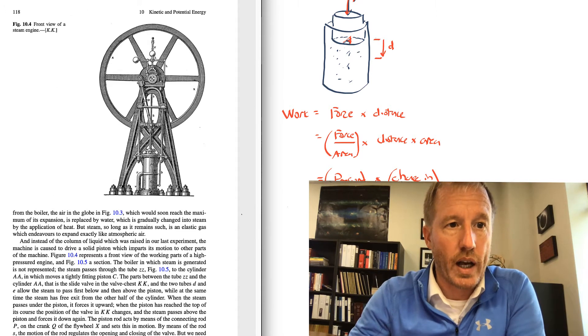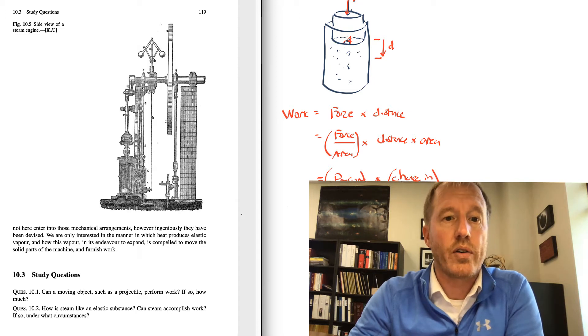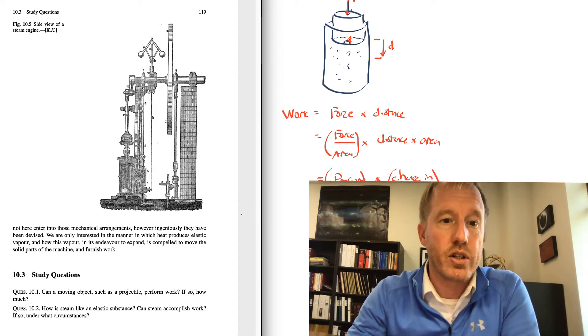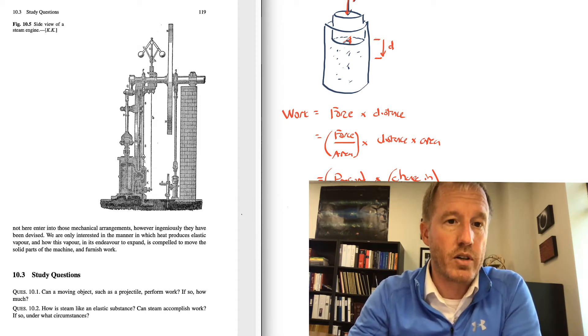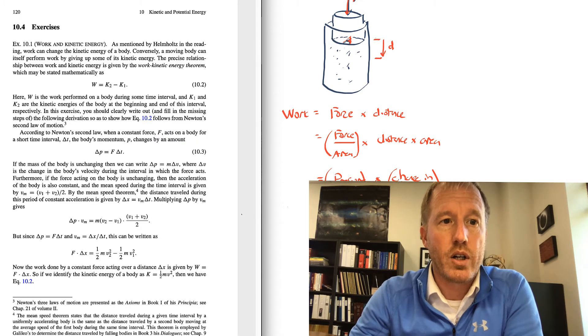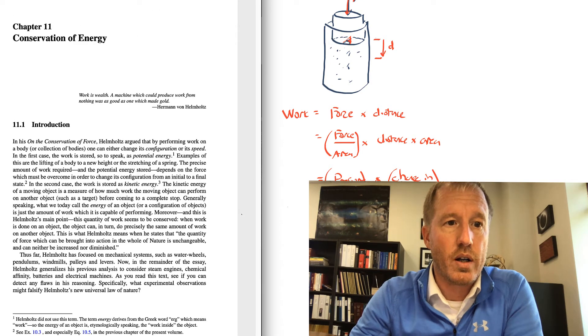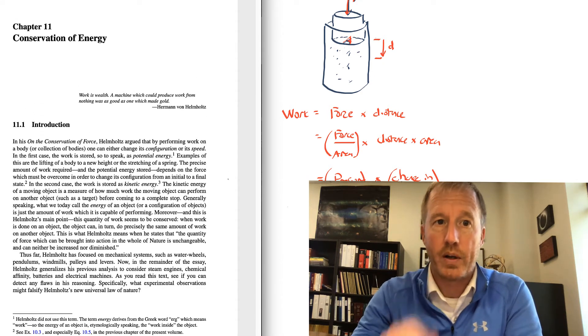That brings us to the end of chapter 10. Helmholtz gives a few other examples of applications — he's very interested in steam and steam engines and machinery, and he spends some time talking about this. But let's jump right into chapter 11 on the conservation of energy. I'm going to begin by reading the very beginning — the introduction — and then next time we'll talk about some of the content of this chapter.